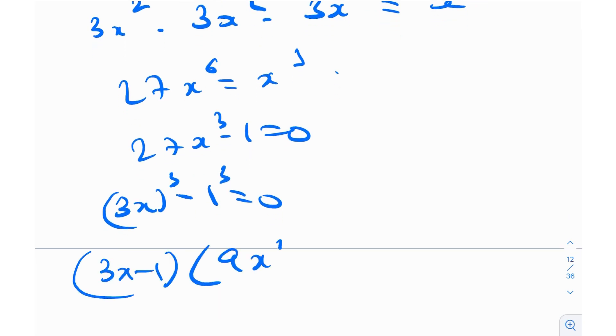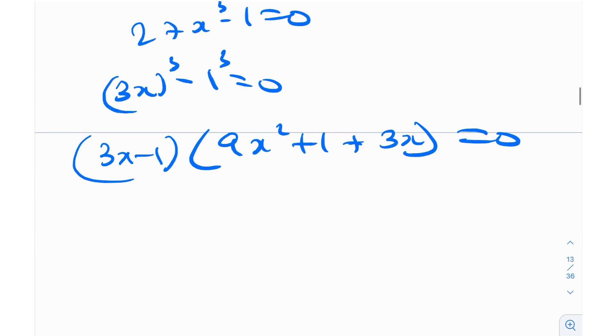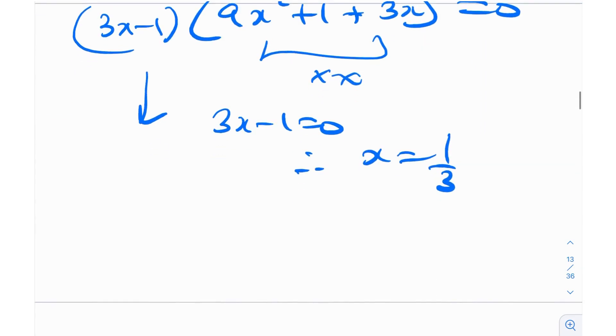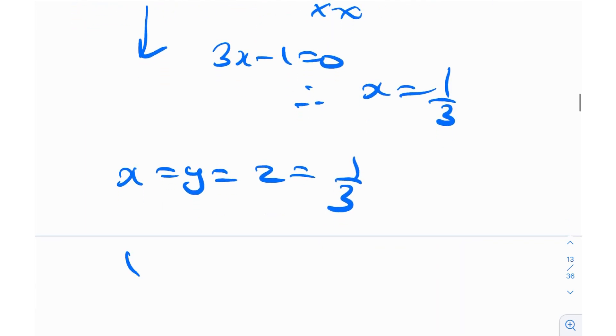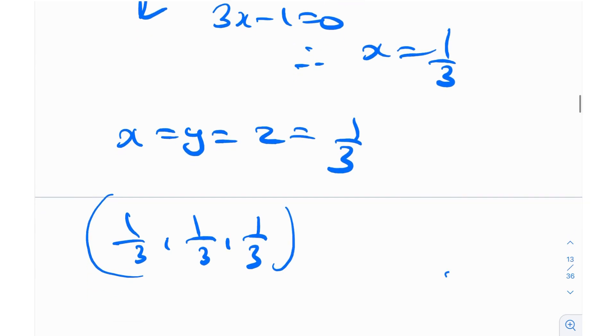So 3x minus 1, this becomes 9x squared plus 1 plus 3x. Now, this obviously does not have any real solution. So the only real solution will be this. 3x minus 1 is equal to 0. Therefore, x equals 1 by 3. And therefore, we can figure out that x equals y equals z equals 1 by 3. And 1 by 3, 1 by 3, 1 by 3 will be the only solution. And you can actually verify this and plug this back into equation number two and find out that this value actually holds true. And it so happens that this is the only value for which it works out.